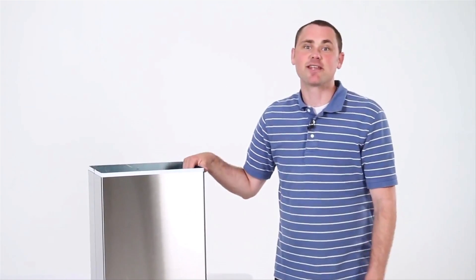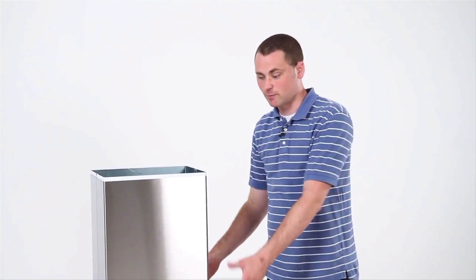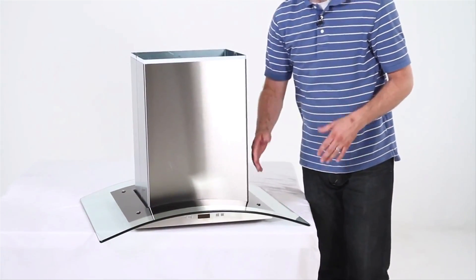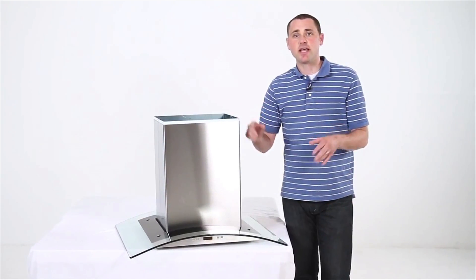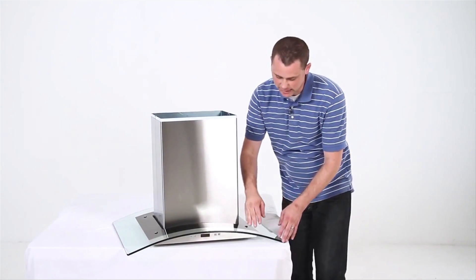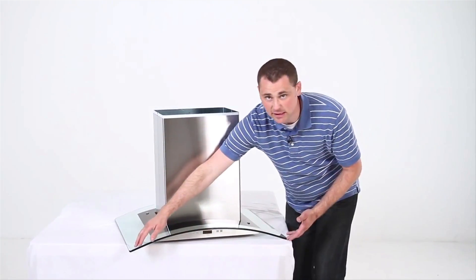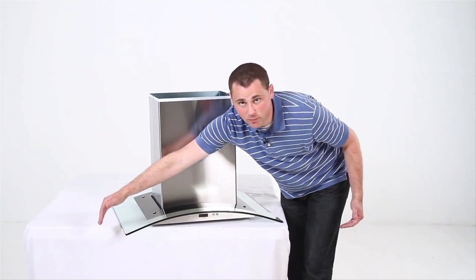So this range hood comes in several different sizes, 30 inches, which is this one, and 36 inches, also 42 and 48. So the only thing that changes in those sizes is the actual glass. So if you get the 36, it just means the glass will be wider.